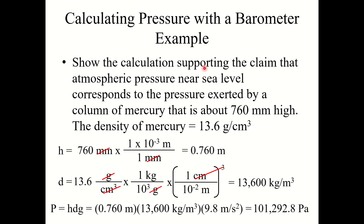This generally supports the claim that atmospheric pressure near sea level corresponds to the pressure exerted by a column of mercury about 760 millimeters high. The pressure at sea level is one atmosphere.